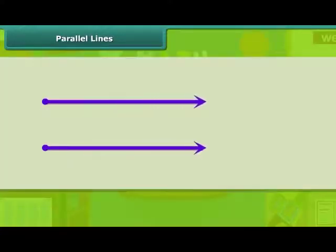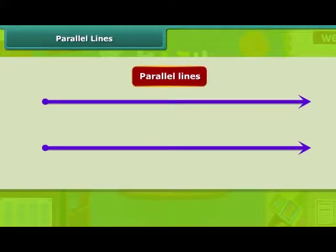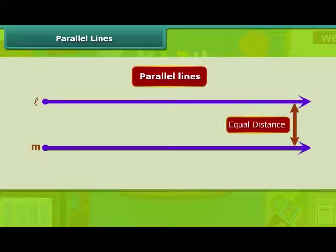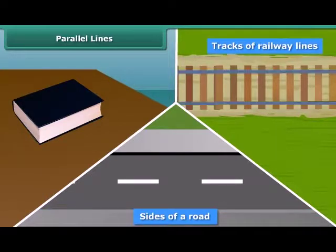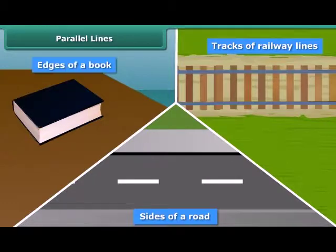Another set of lines are those which do not intersect. Such lines, which do not meet at all, are called parallel lines. The distance between these lines remain constant. Here, two lines, L and M, do not intersect. So, they are parallel lines. A few examples of parallel lines from daily life includes sides of a road, tracks of railway lines, and edges of a book.